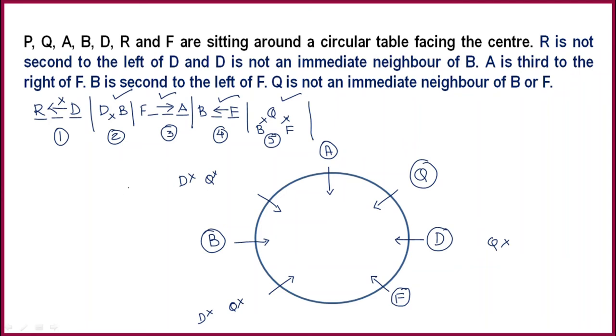Next, R is not second to the left of D. So if we see left, R can't come here. Because of this, what we will get is R is sitting here. And who has left us now? We have left P. So P is the one that can sit here.